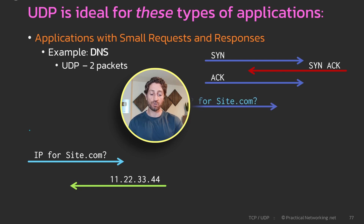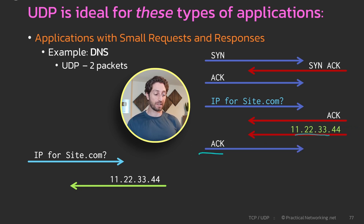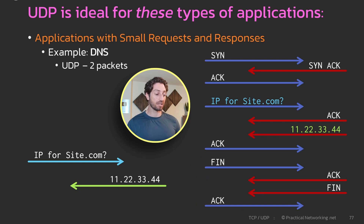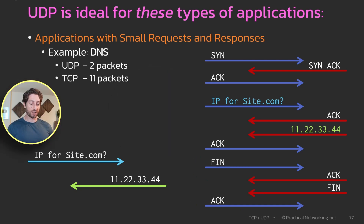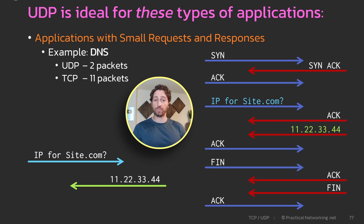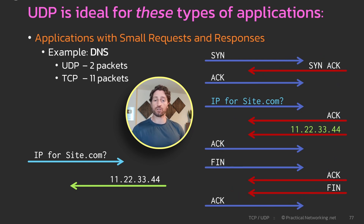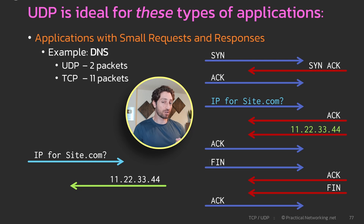By comparison, if we did this same conversation over TCP, you'd first have to start with the three-way handshake, then the client would make its request and the server would confirm reception, then the server would send its response and the client would confirm reception of that response, and finally both sides would close the connection. The whole thing takes 11 packets over TCP compared to just two. And if you're really concerned with reliability for a conversation this small, you can just send it twice or even three times — that's still only six packets, less than TCP requires for one request.